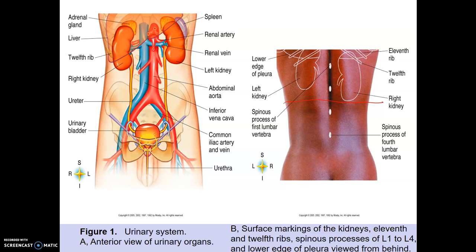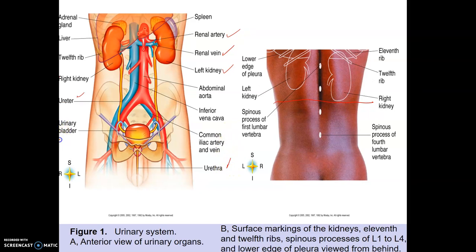The ureter drains down into the urinary bladder, and the urinary bladder then drains out of the body through the urethra. The things we're going to focus on are the renal vein, the renal artery, the left kidney, and the right kidney. There's a left and right ureter, then the urinary bladder and the urethra.